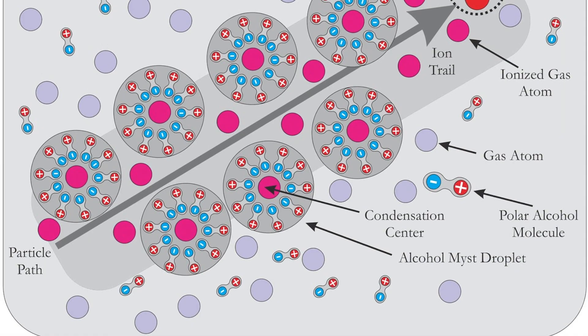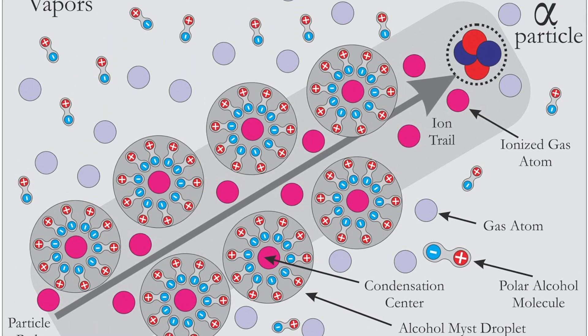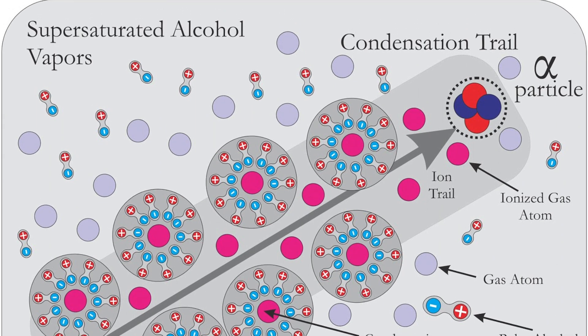When a charged particle passes through the chamber and ionizes the vapor, it creates a trail of ions that can act as nucleation sites, causing the vapor to condense into droplets and form visible tracks. These tracks can be used to study the properties of the charged particles and the interactions they have with matter.